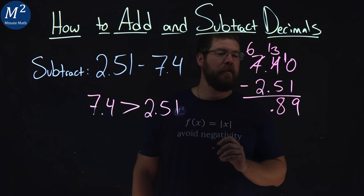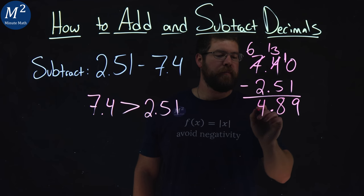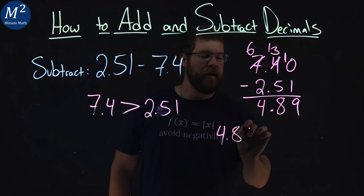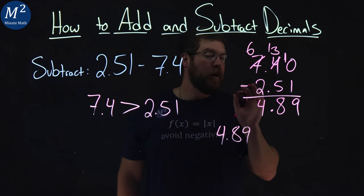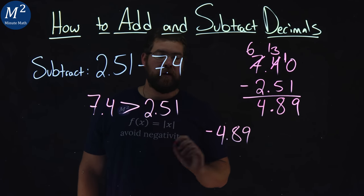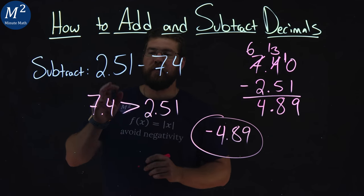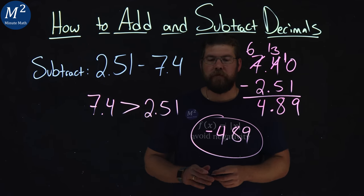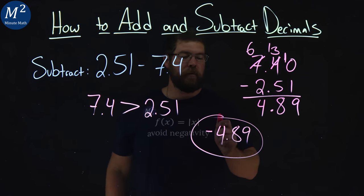Decimal place right here. Then 6 minus 2 is 4. So 4.89 isn't our result yet. Remember, it had to be negative. Put a negative on it, and there we have it. 2.51 minus 7.4 is negative 4.89.